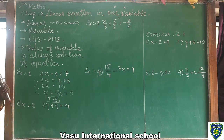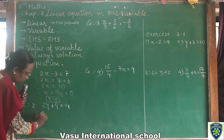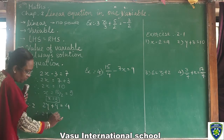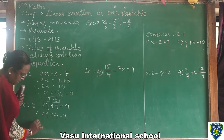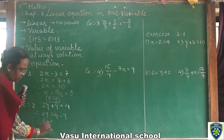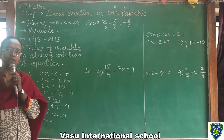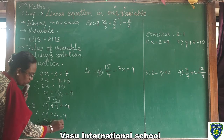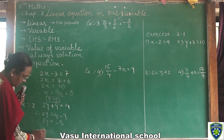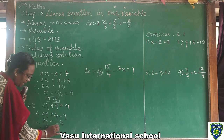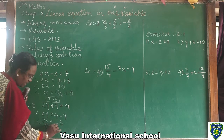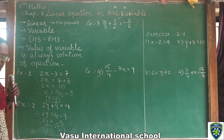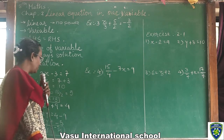Second sum: 2y plus 9 equal to 4. In the same way, 2y equal to 4, and plus 9 changes side to make minus 9. So 2y equal to 4 minus 9, that is minus 5. Therefore y equal to minus 5 divided by 2. So y equal to minus 5 upon 2 is the solution of the given equation 2y plus 9 equal to 4.